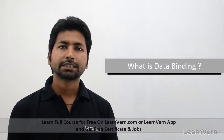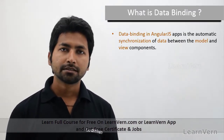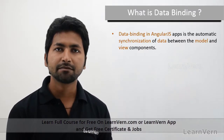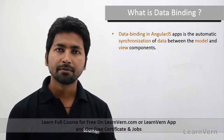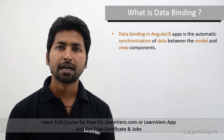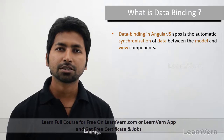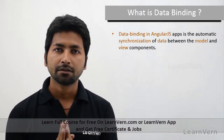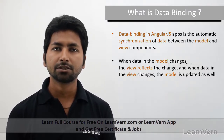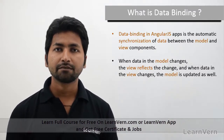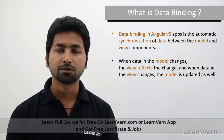Now let's move to data binding. Data binding enables you to access your variable throughout your HTML file and your JavaScript file. Whenever you make changes in either of them, you get the updated value in both your HTML and your model. Data binding is the automatic synchronization of data between your view and your model — changes in the view reflect in the model and vice versa. This is how we achieve two-way data binding in AngularJS.